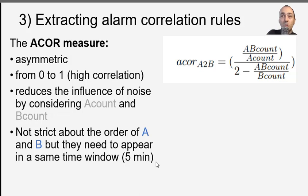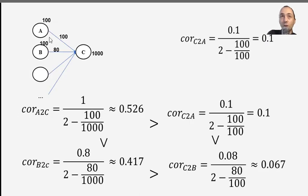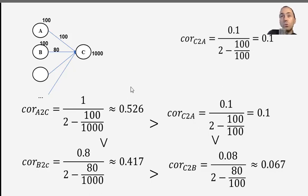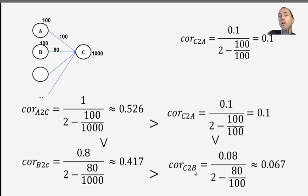Let me show a small example of how to calculate this measure. We have alarms A and B for some connected nodes. A appears 100 times, B 100 times, A and C appear together 100 times, B and C together 80 times, and C appears 1,000 times. The calculation gives: B to C = 0.4 and C to B = 0.06, so the rule 'B implies C' has a much higher correlation than 'C implies B.' This confirms the asymmetry that we wanted for this project.